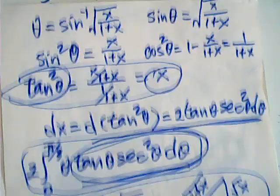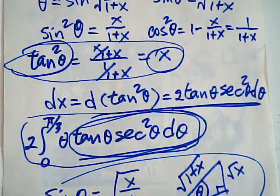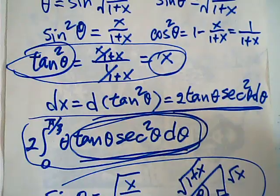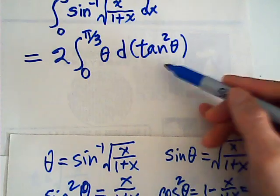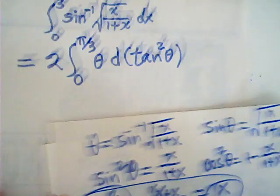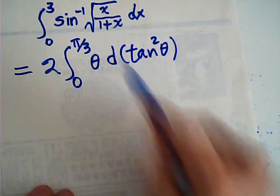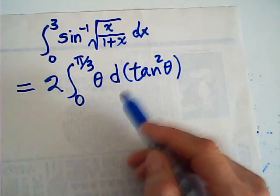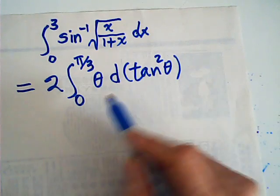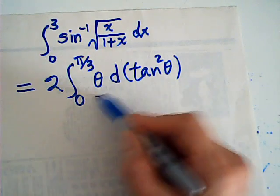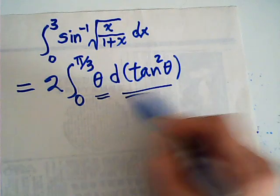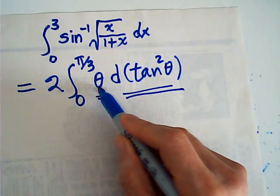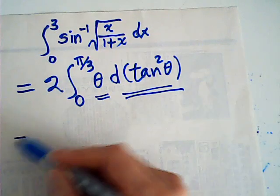When you expand, it makes a simple story complicated. This form looks nicer because we are prepared to use integration by parts. This theta is u and d(tan² theta) is dv. So this is u dv.